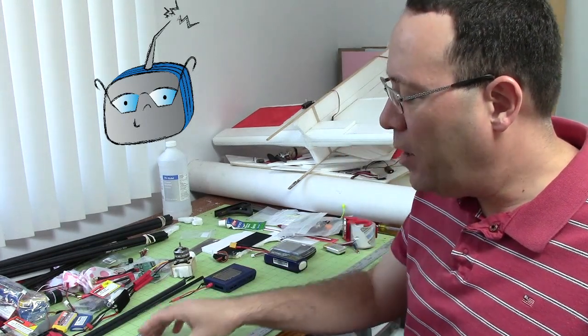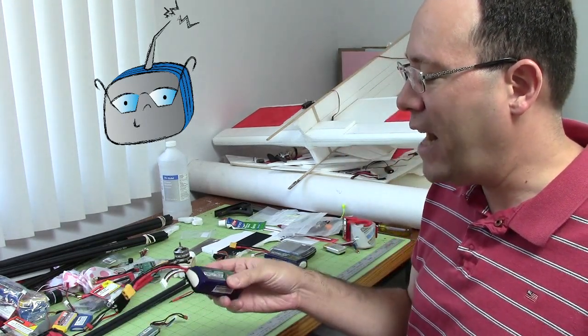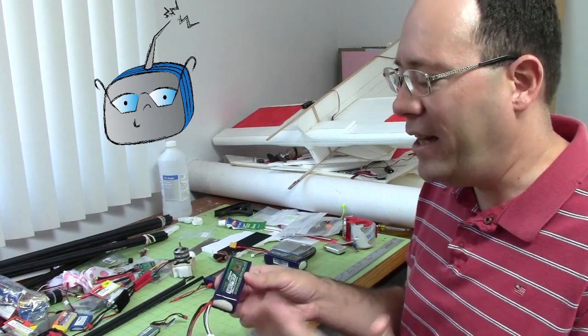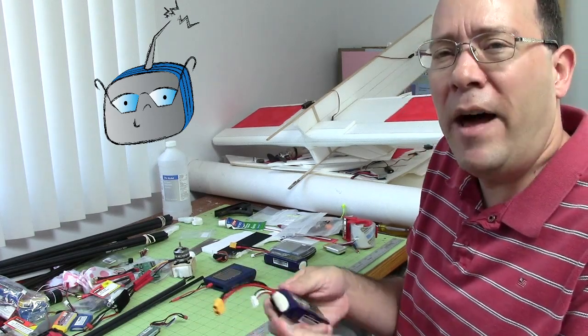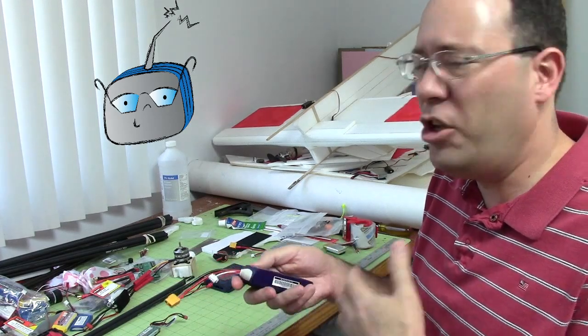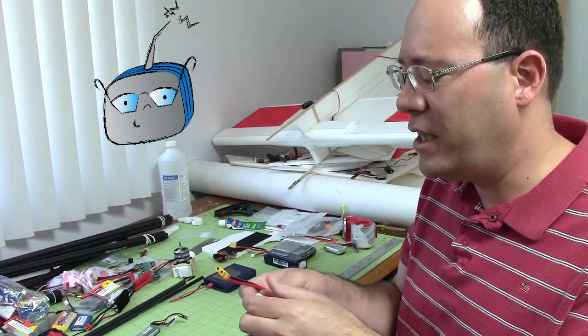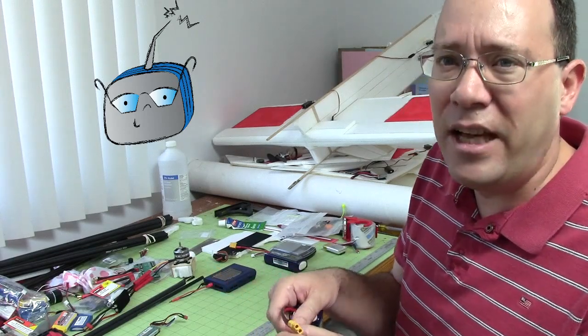The nice thing about the internal resistance values is that nowadays most chargers will display these values and you'll either get one value for the whole battery pack or more usually one value for each cell. And that's very nice and convenient because you're always going to be charging the batteries and it doesn't take any time.